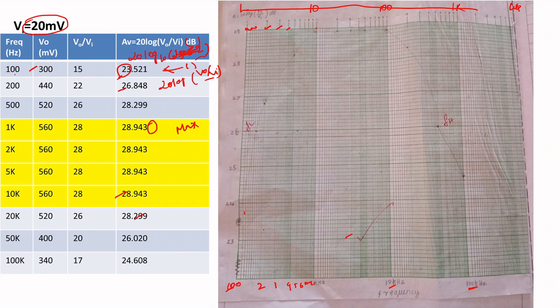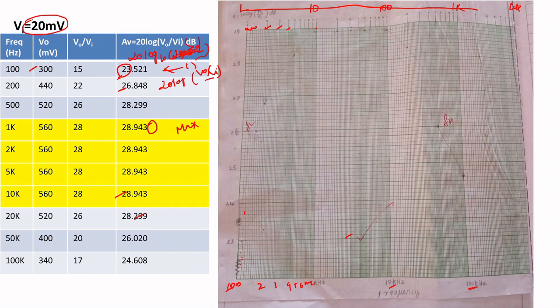Now we will go for the first value: frequency 100 Hz and gain 23.521 dB. How many divisions are there? 10 divisions. That means each subdivision is 0.1, so the markings go 23.1, 23.2, 23.3, 23.4, 23.5, 23.6, 23.7, 23.8, 23.9. Based on the values taken, if the range is 23 to 25, each subdivision would be 0.2. In our case, the difference is 1, so each subdivision is 0.1.